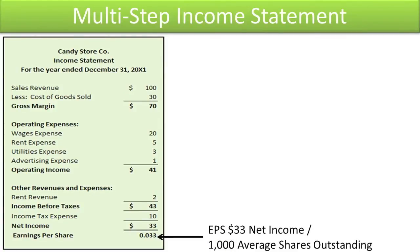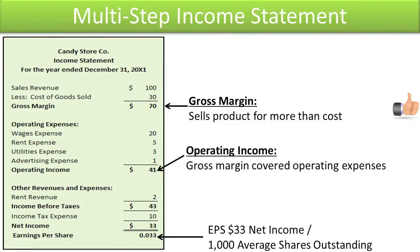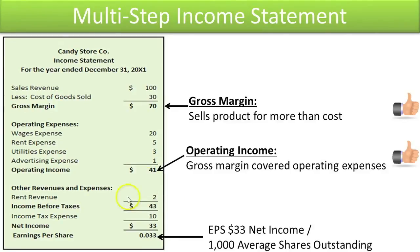Here are some key benefits of the multi-step income statement. First, it indicates that the company was able to sell its product for more than its cost — gross margin. The candy store's gross margin of $70 is positive, a clear indication it sold its product at a price (sales revenue) greater than its cost (cost of goods sold). Second, it shows that the company generated positive income from its core operations — operating income. The candy store's operating income of $41 is positive, indicating its gross margin was more than enough to cover basic operating expenses of wages, rent, utilities, and advertising.